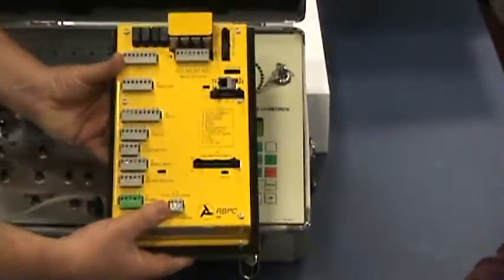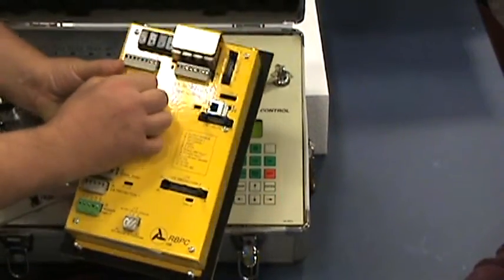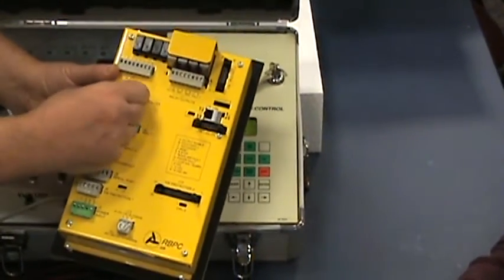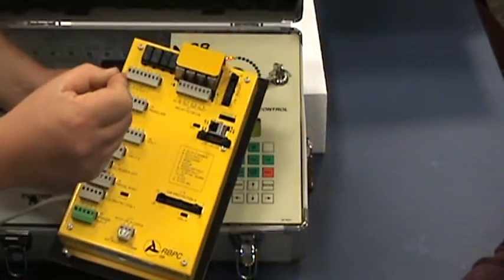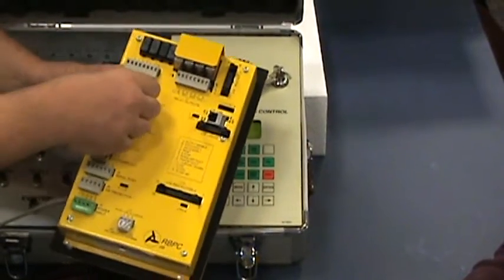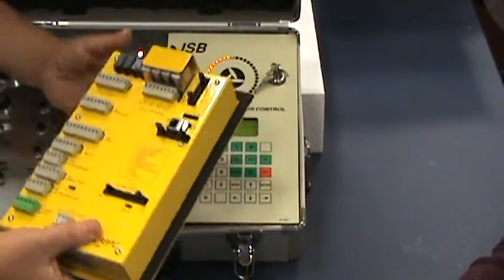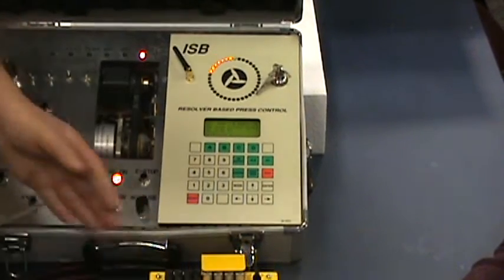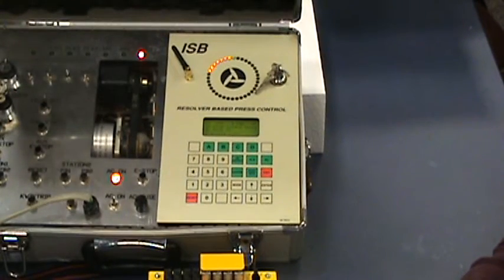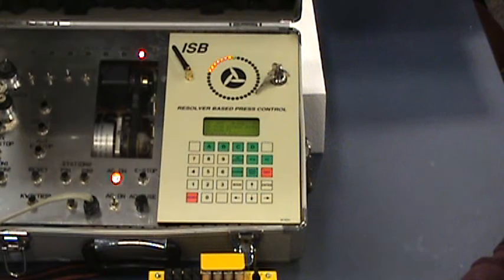The back side, every connection is made via Phoenix terminal blocks. These blocks unplug, you hook your wires up, you plug them back in. So that's an important part of your installation. Be neat in the beginning, use like 16 gauge machine tool wire, make sure your wires are not frayed, put them in correctly.